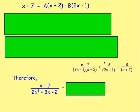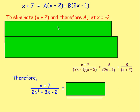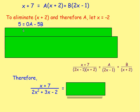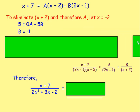We want to eliminate either A or B by picking a value of x. Let x = −2 to give 0A. That gives −2 + 7 = 5, and 2(−2) − 1 = −5, so 5 = −5B, meaning B = −1.